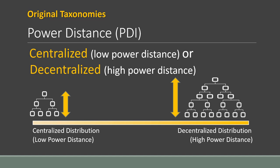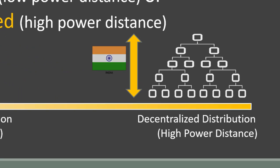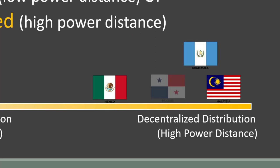For cultures with high power distances—a decentralized distribution of power—inequality is accepted as normal, and the positions people occupy come with varying degrees of power. However, authority is highly respected. If an elder tells you to do something, you do it, because you recognize that you have less power than your elders—or your teacher or the government. Think about the caste system in India, where it's almost inconceivable to marry above your station. And in Mexico, the Spanish language inherently communicates respect with two different words for 'you'—one formal and the other informal. Malaysia, Guatemala, Panama, and the Philippines are examples of cultures with higher power distances.